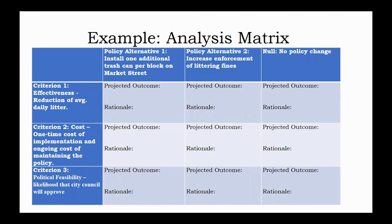Since you've already explained each policy in worksheet one, you can just use a simple statement or policy title for the matrix. Policy alternative one is to install an additional trash can per block. Alternative two is to increase the enforcement of littering fines, and the null is no policy change. Criterion one is effectiveness — in my case, the projected daily average reduction of litter. I've also chosen cost, here one-time cost of implementation and ongoing cost of maintenance, and political feasibility — the likelihood that City Council will approve of the policy — as my other two criteria. This is as far as you'll go in worksheet two. You aren't going to fill in the middle boxes until the next worksheet when you actually make your projections. Submit your analysis matrix with your worksheet, but also save a copy so you can finish filling it in for worksheet three.